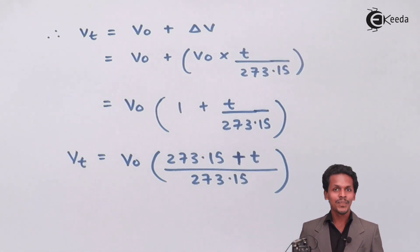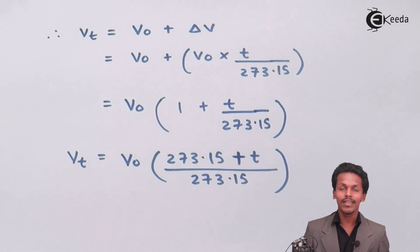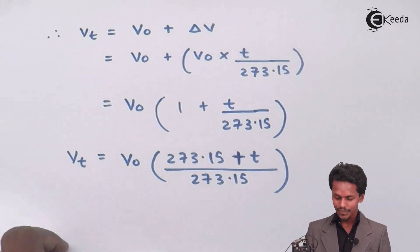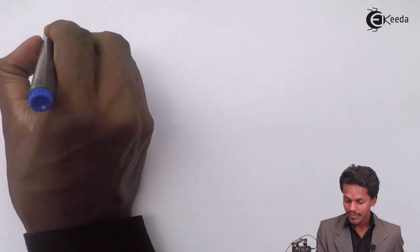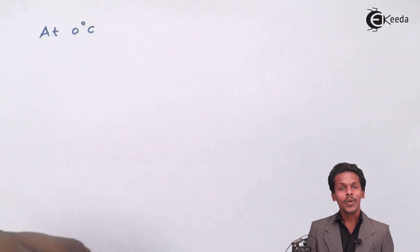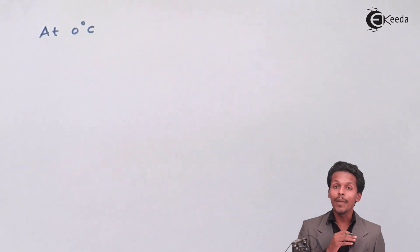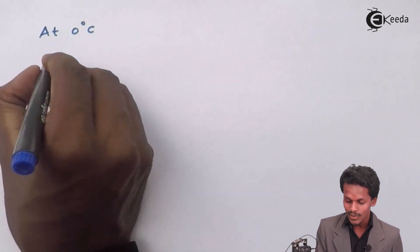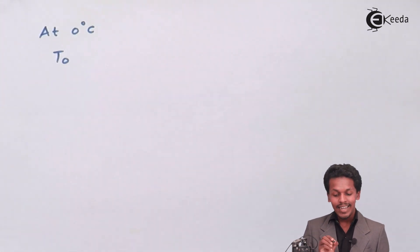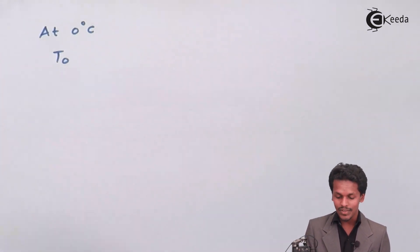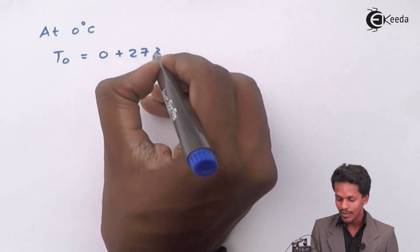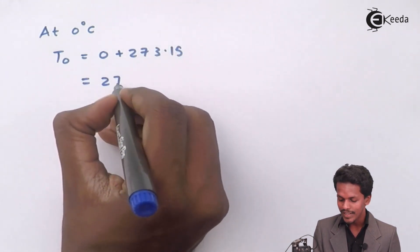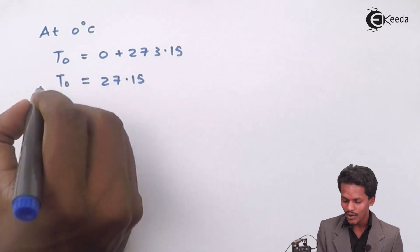Now, 273.15 is nothing but 0°C converted to Kelvin. So if we denote T0 as the temperature at 0°C in Kelvin, then T0 = 0°C + 273.15 = 273.15 K. This is the value of T0 that we have established.